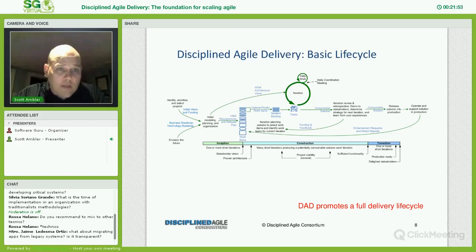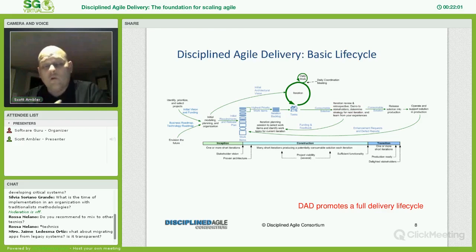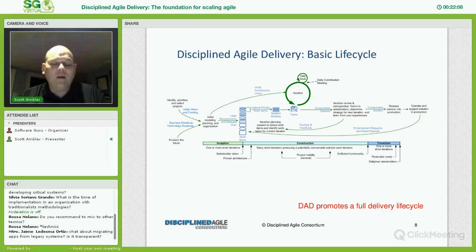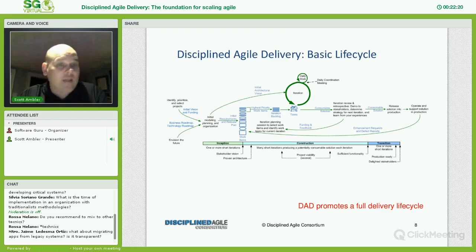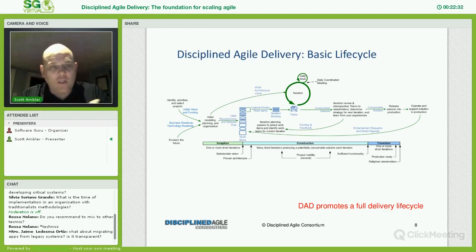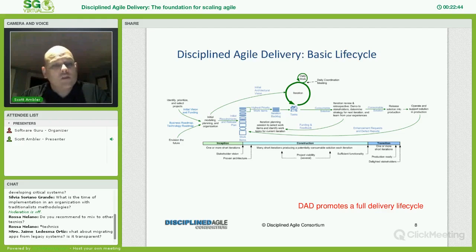Along the bottom of the lifecycle diagram you see some lightweight milestones. Scrum has two built-in milestones — they're constantly asking about viability and working towards a minimally viable product or sufficient functionality. When you look at the overall lifecycle, you realize there are other milestones worth considering. We should come to some sort of stakeholder vision early in the project to pay down business risk. We should prove our architecture with working code early in the lifecycle to pay down technical risk. We should deploy when production-ready, and we should try to measure whether our stakeholders and end users like what we produced.